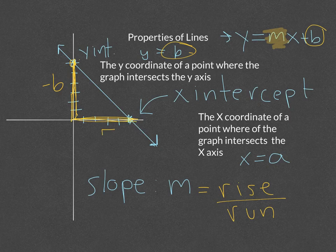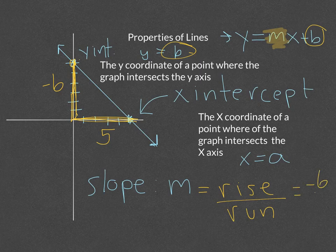So that means the slope of this line that is drawn here would be negative 6 over 5.